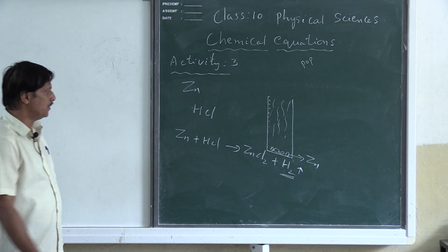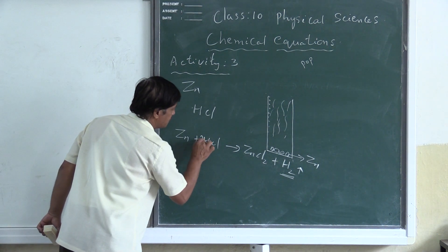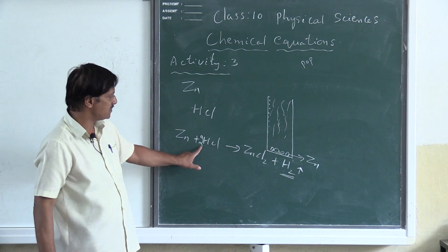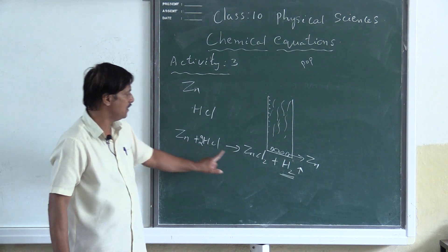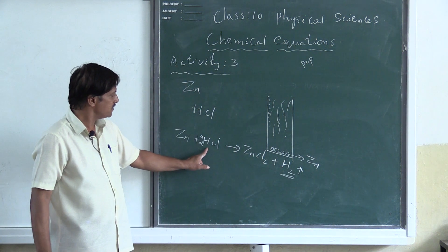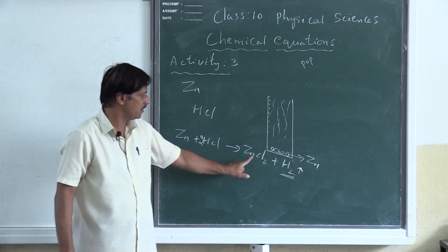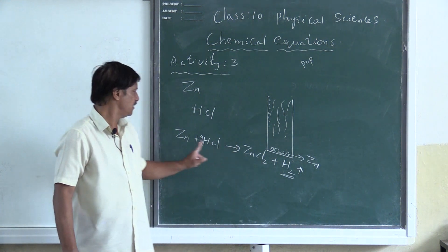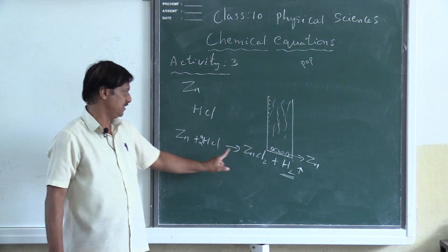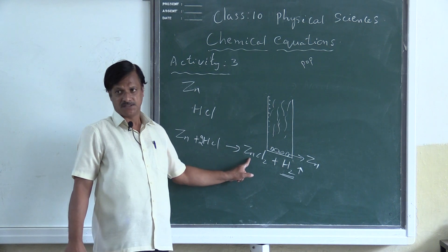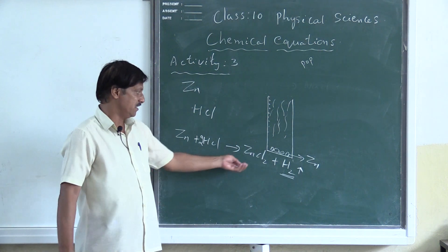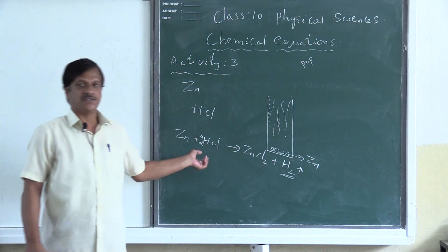If you balance this equation, we make it: Zn + 2HCl → ZnCl₂ + H₂. There are two hydrogens on the left and two hydrogens on the right; two chlorines on the left and two chlorines on the right; one zinc on the left and one zinc on the right. So this equation is balanced.